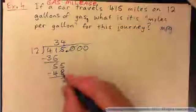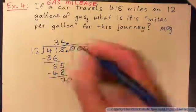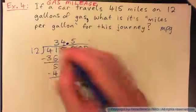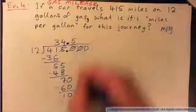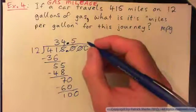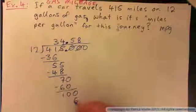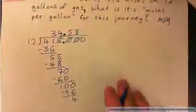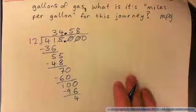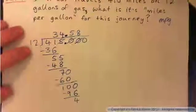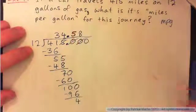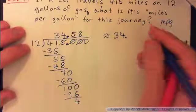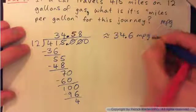Bring a 0 down. 12 into 70 — decimal point goes up here in the answer. 12 into 70 goes 5 times; 5 times 12 is 60, subtract and get 10. Bring a 0 down; 12 into 100 goes 8 times; 2 times 8 is 16, carry the 1, 1 times 8 is 8 and 1 is 9, subtract and get 4. So 34.58, and rounding to the nearest tenth, that rounds up to 34.6 MPG, miles per gallon.